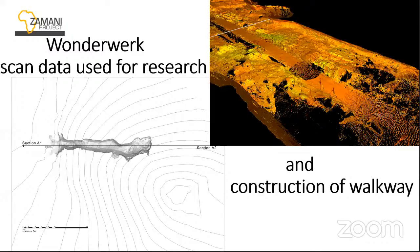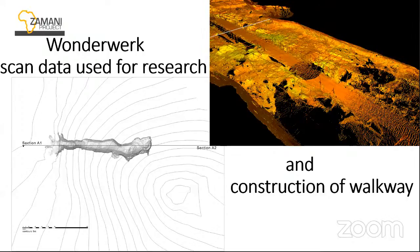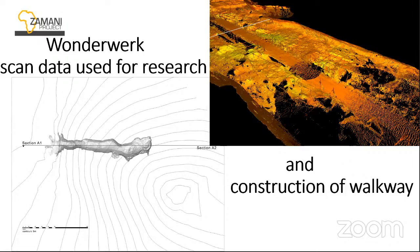Another application is a cave in South Africa. Our data were used for research — it is supposedly the place with the oldest ever human-made fire, about 300,000 years ago. In publications they used our data for measurements, including a wind study to determine whether ash found in the cave could have been brought in by wind rather than by human-made fire. You can see from the scale it is quite a long area — over 100 meters. They also used our model to design a walkway to protect the archaeology from visitor damage.